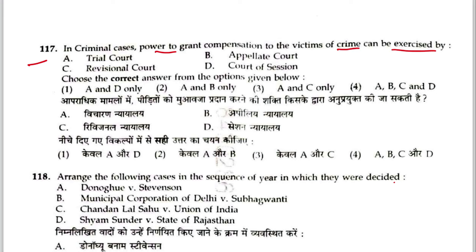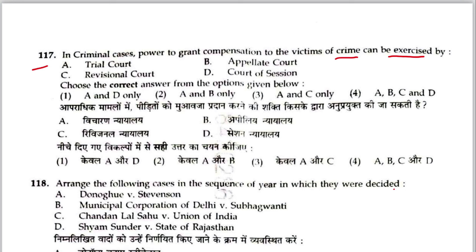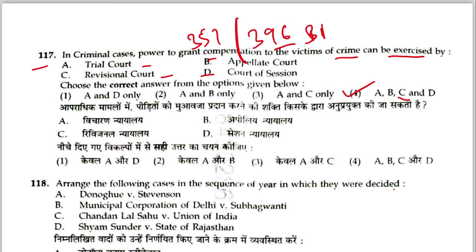Question 117: In criminal cases, power to grant compensation to the victim of crime can be exercised by the Court of Session — answer is D (all of the above). Answer is 4. The provision is Section 357 of CrPC, now Section 396 of Bharatiya Nagarik Suraksha Sanhita.